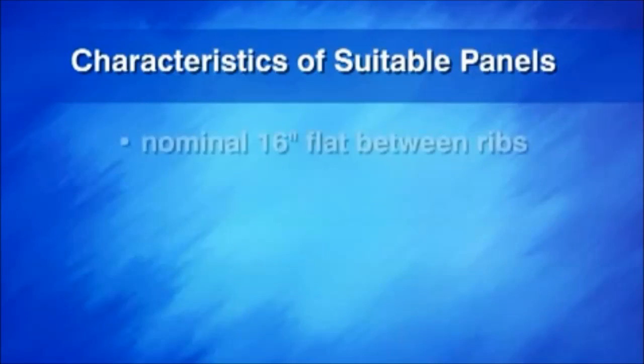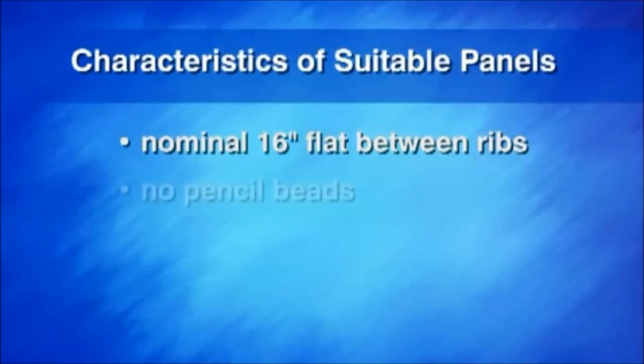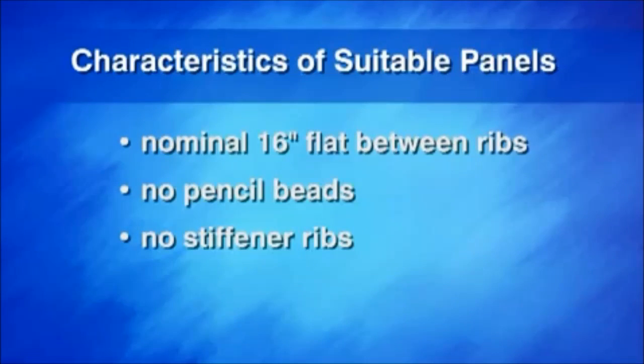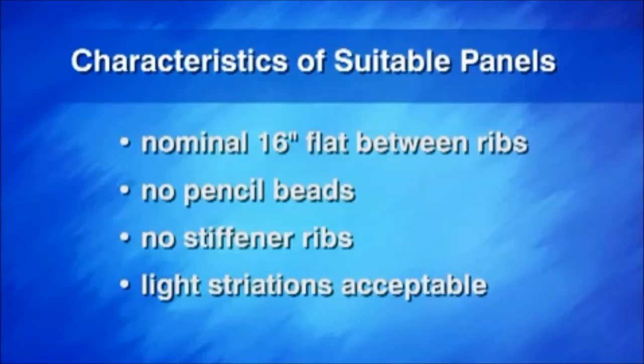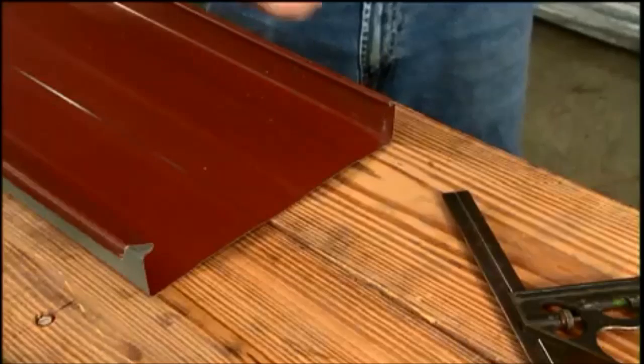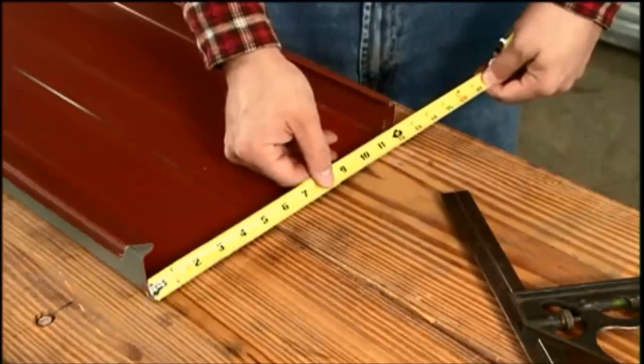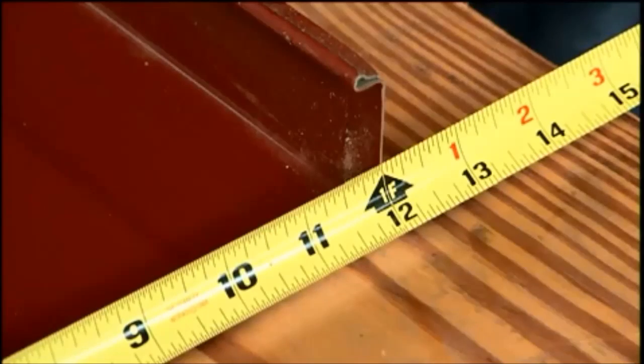The panels must have a nominal 16-inch wide flat area between ribs with no pencil beads or stiffener ribs. Light striations with an angle of 15 degrees or less relative to horizontal are usually acceptable. The first sample panel is only 12 inches wide, obviously not an acceptable profile.